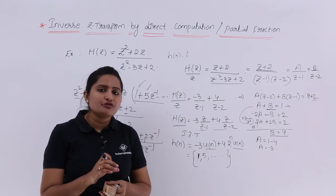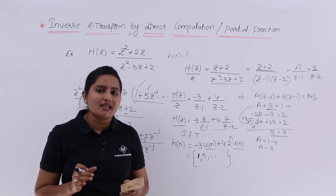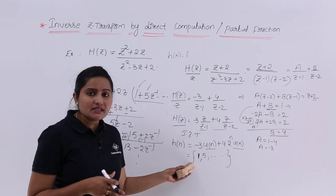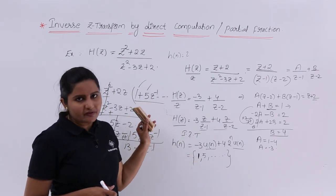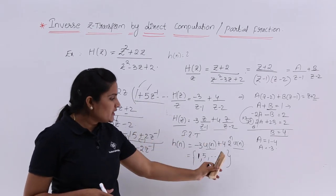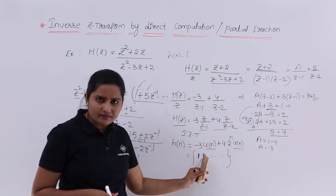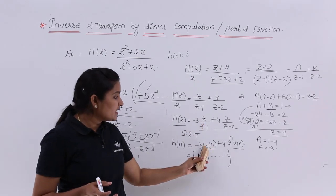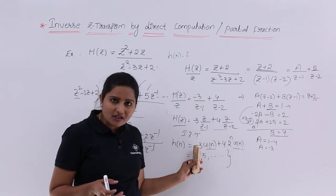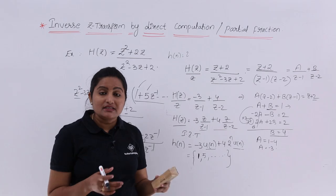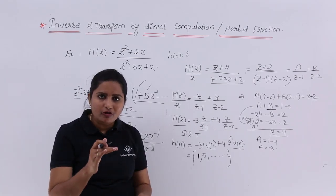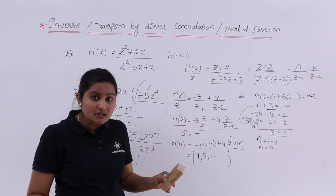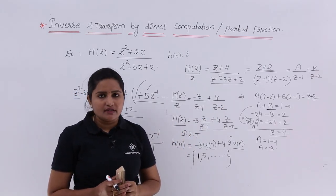According to the options in a given problem, you should choose the appropriate method. If the answer is given in terms of samples, the division method is perfect. If the answer is expressed as a function and the transfer function has equal-degree polynomials, then the partial fraction method is the most appropriate choice for calculating the inverse Z-transform.